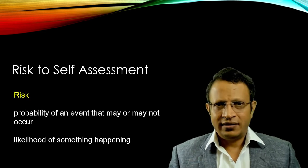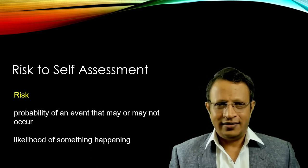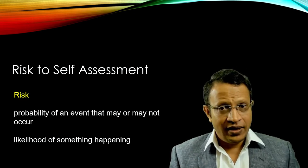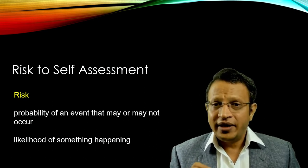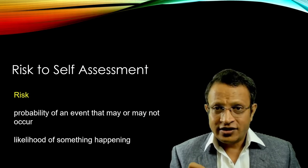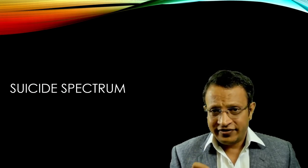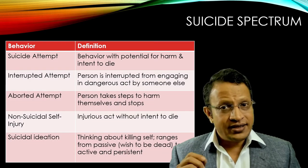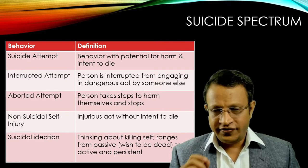What do you mean by risk? Risk means a probability of an event that may or may not occur — it is the likelihood of something happening. Risk to self means what is the probability of harming oneself, attempting suicide, or completing a suicide. Risk to self is a spectrum — I would rather place it as a suicide spectrum — starting from suicidal ideation through to completion of suicide.